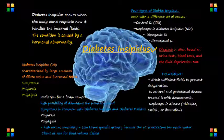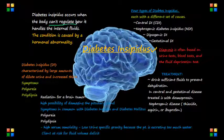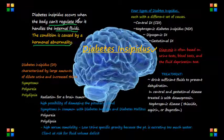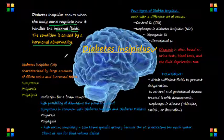Diabetes insipidus occurs when the body can't regulate how it handles its internal fluids. The condition is usually caused by a hormonal abnormality, and it is not related to diabetes mellitus at all.